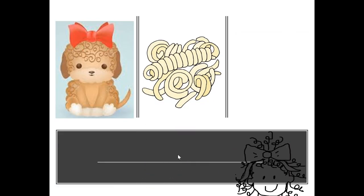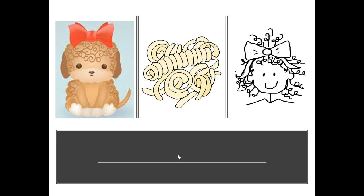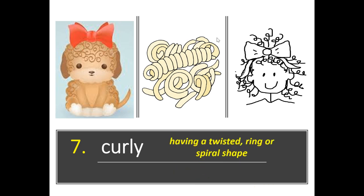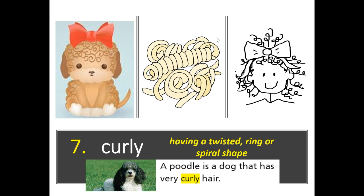Number seven — next group of pictures. What do you notice or see? I notice this dog has curly brown hair, this looks like curly fries, and this girl has curly or wavy hair. How are these all the same? They all have curly or wavy hair. So the word is curly — C-U-R-L-Y. Curly means having a twisted, ring, or spiral shape. A poodle is a dog that has very curly hair. Think about it — who do you know that has curly hair?